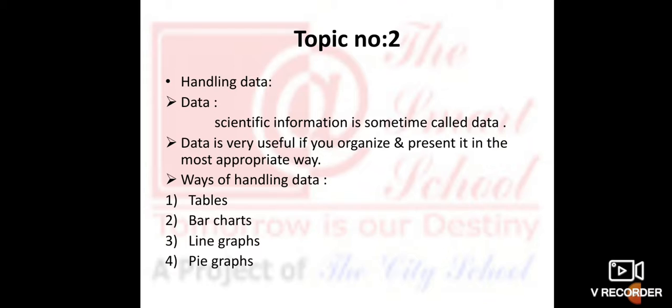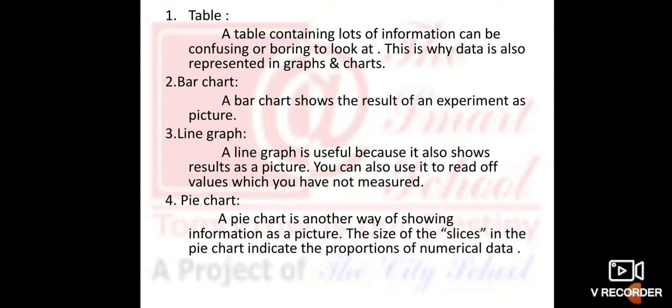Handling data can be done in number one tables, bar charts, line graphs, and number four pie graphs, which we explain one by one. What is a table? Table is a table containing lots of information. This information can be confusing or boring to look at. This is why data is also represented in graphs and charts. This is a way of data handling, but it becomes a bit boring sometimes.